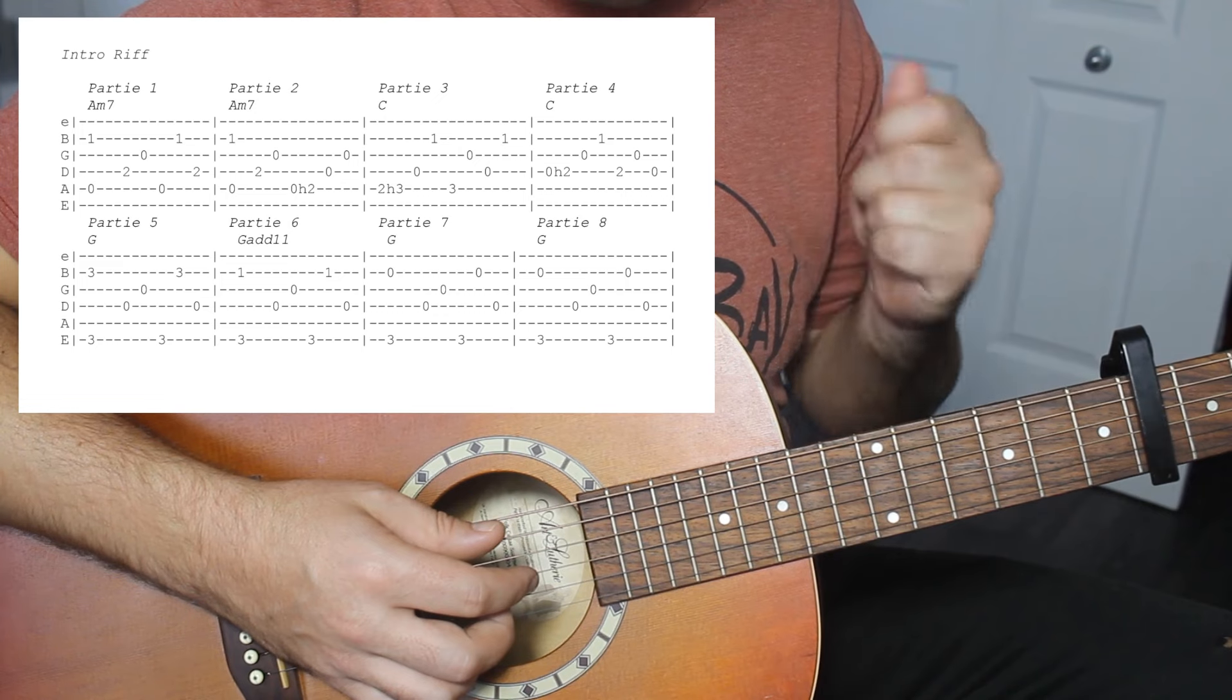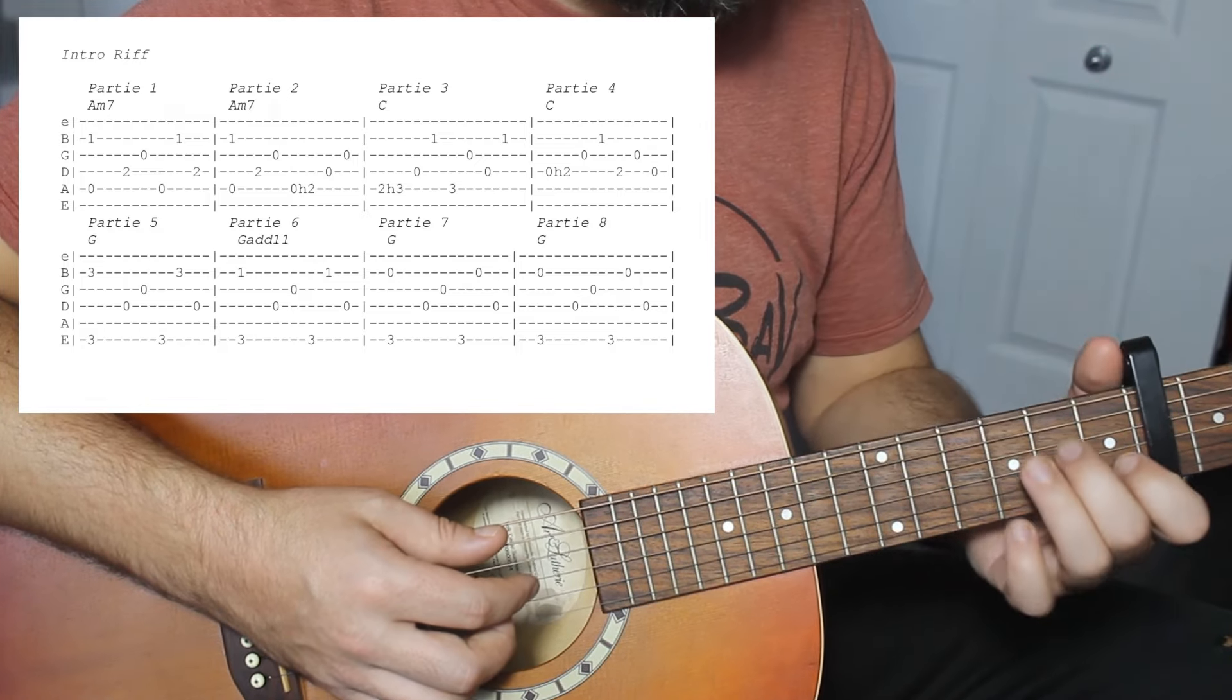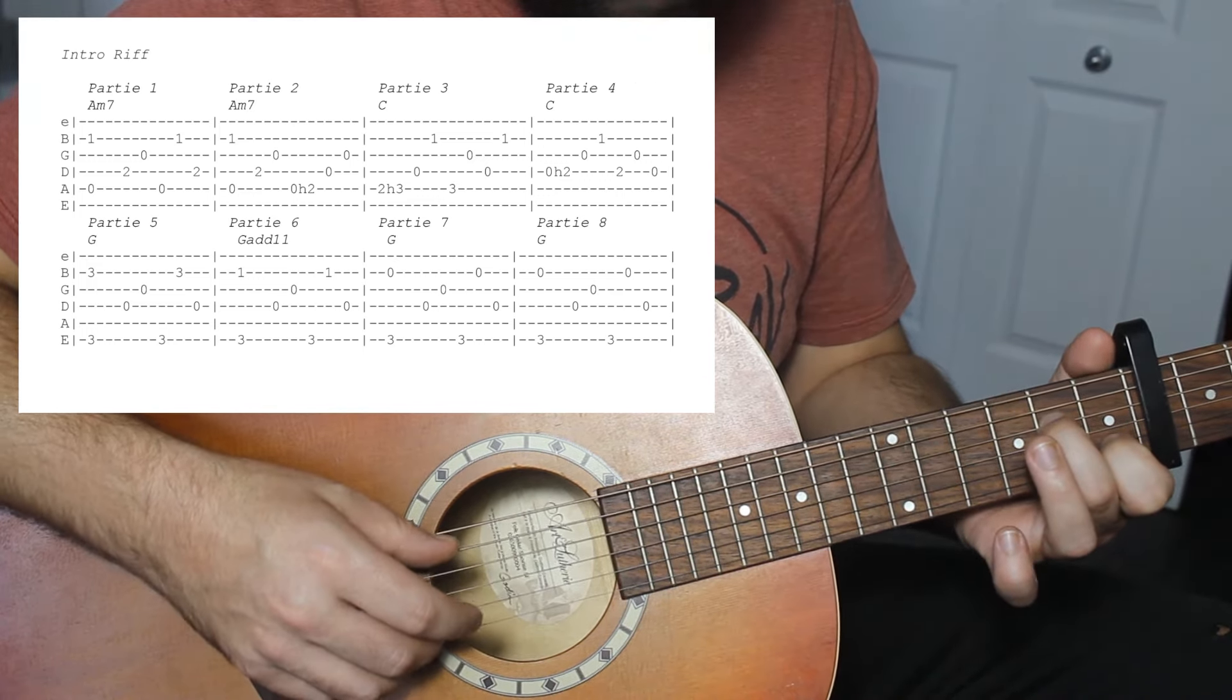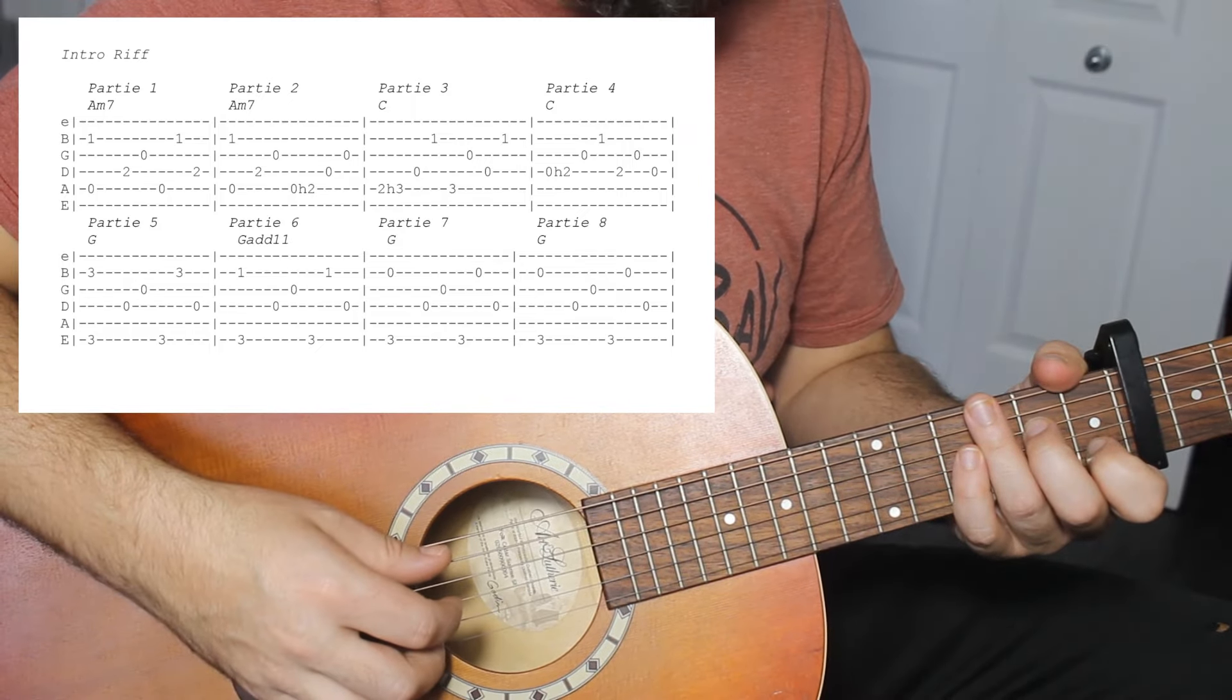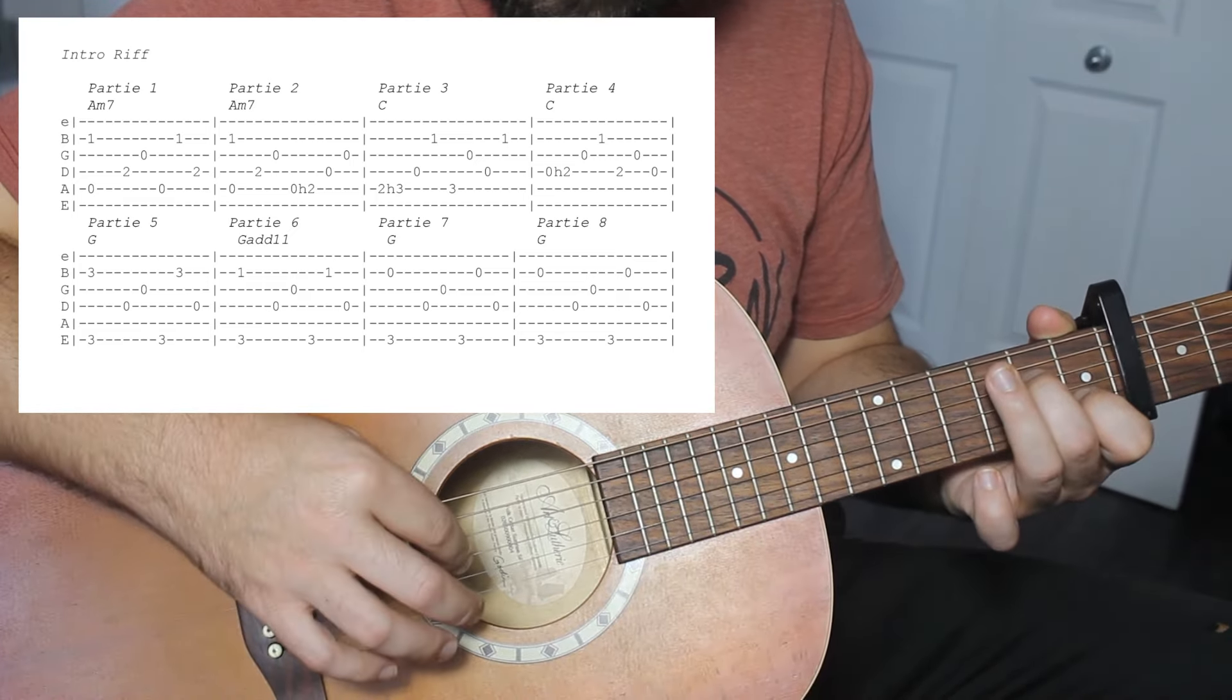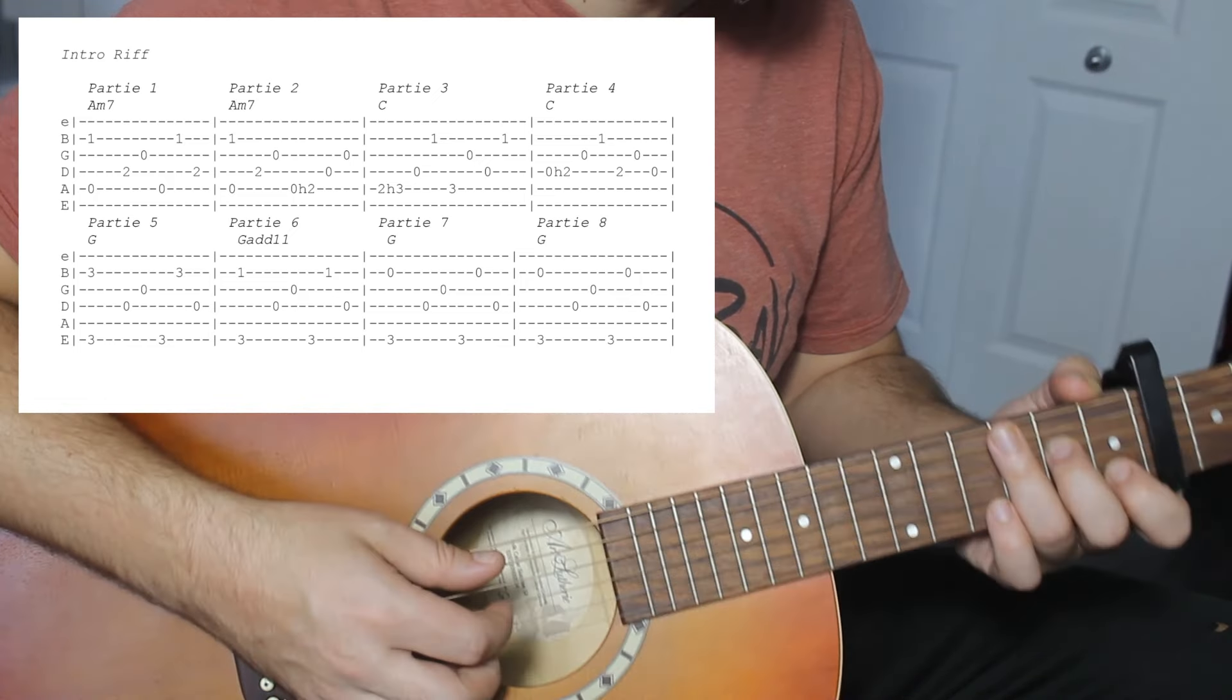C'est parti. Je vais vous montrer maintenant le pattern général. Vous allez voir que, durant le riff, il n'y a pas toujours le pattern. Mais, en général, vous avez le pattern. Puis, après, vous allez décortiquer un petit peu. C'est parti. Am 7e. La règle générale, quand on fait du Travis Picking, c'est qu'on vient chercher avec le pouce la corde 6, la corde 5 et la corde 4. Et, avec les autres doigts, on vient chercher corde 3 avec l'index, le majeur corde 2 et le troisième doigt avec la première corde. Tout le temps.